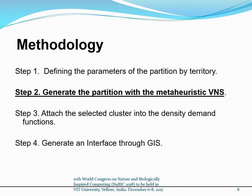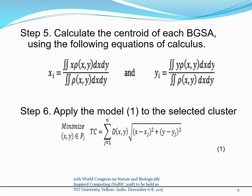Step 1: Defining the parameters of the partition by territory. Step 2: Generate the partition with a meta-heuristic variable neighborhood search. Step 3: Attach the selected cluster into the identity demand functions. Step 4: Generate an interface through geographic information systems. Step 5: To calculate the centroid of each basic geostatistical area, we use the following equations of calculus.